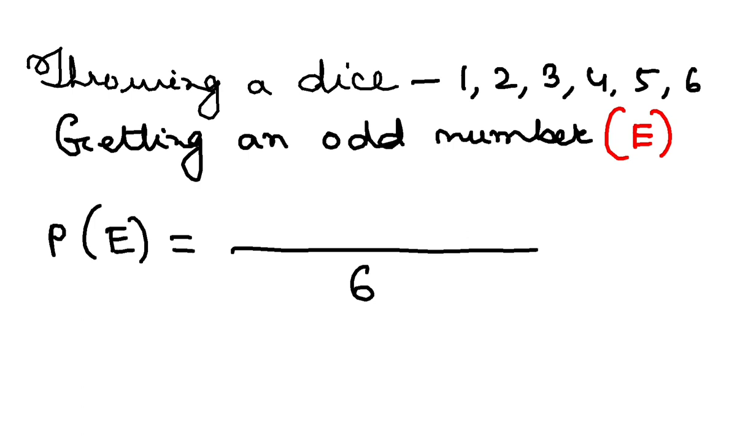Now what is the event getting an odd number? So how many favorables? Odd number: 1, 3, 5. So there are 3 favorable outcomes. So 3 by 6, this is my probability. So if I bring it to the lowest form, my probability is 1 by 2.